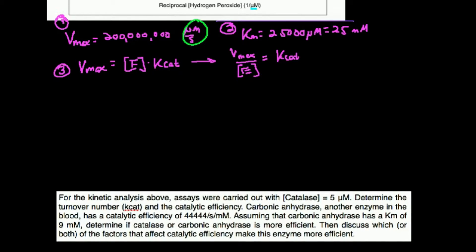The numerator is a concentration unit; the denominator is a time unit. I don't care about the time unit — it could be seconds, minutes, hours. But whatever the concentration unit is (in this case micromolar), the enzyme concentration used also has to be micromolar. Your Vmax could be in nanomolar, but then your enzyme concentration would also have to be nanomolar. They have to be the same. The time unit can be whatever you want, though normally people use per second.